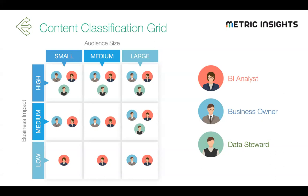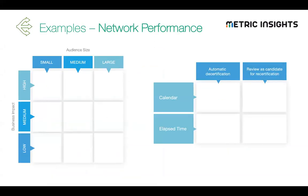Following this approach, you can fill in the grid based on what's appropriate in your business and create a mapping that says who should be involved in each step of the governance process for each particular asset. Some assets require three-party governance, some require one, some require two. There's also a grid on the right for determining where the decertification and recertification process applies — we'll discuss that in a moment. For example, a network performance report used by a handful of engineers clearly has small business impact and a small audience.